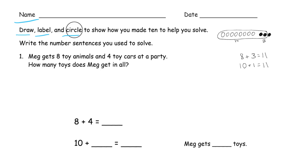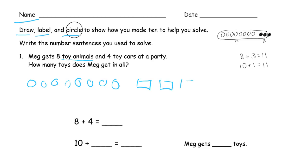Meg gets 8 toy animals and 4 toy cars at a party. How many toys does Meg get in all? So we need 8 toy animals — 1, 2, 3, 4, 5, 6, 7, 8 — and 4 toy cars — 1, 2, 3, 4.